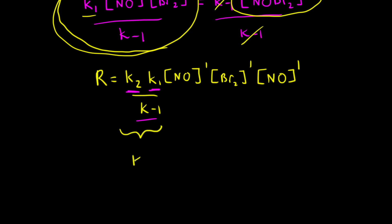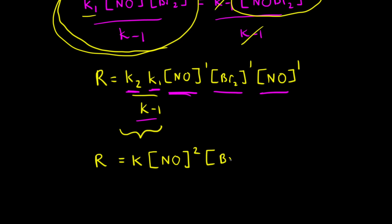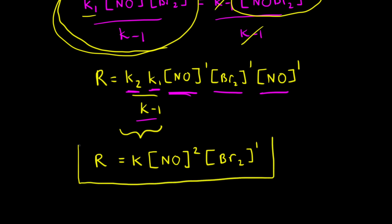K is now the rate constant for the overall reaction. The rate law for the overall reaction is K times the concentration of NO to the second power — because [NO] to the first times [NO] to the first equals [NO] squared — times the concentration of Br2 to the first power. We now have a rate law in terms of our two reactants.